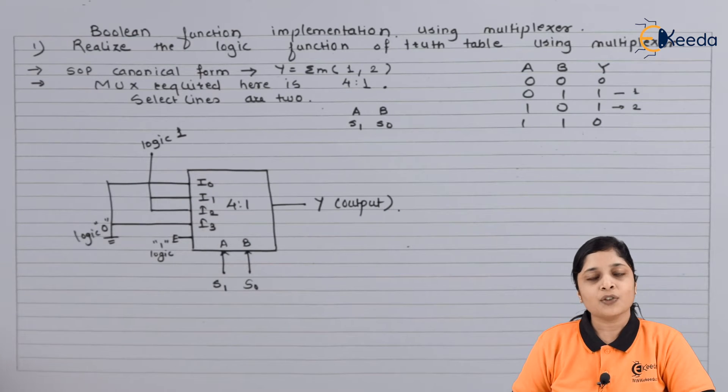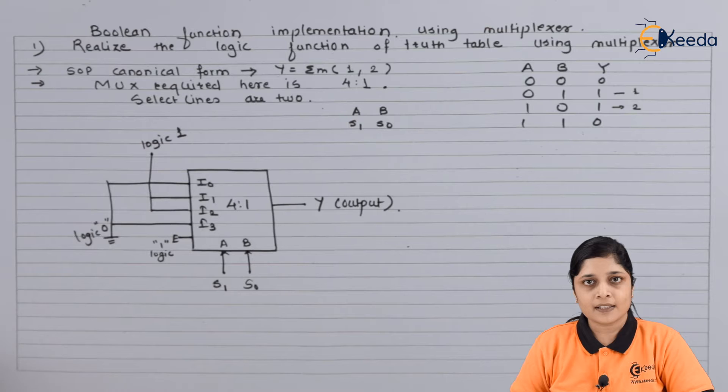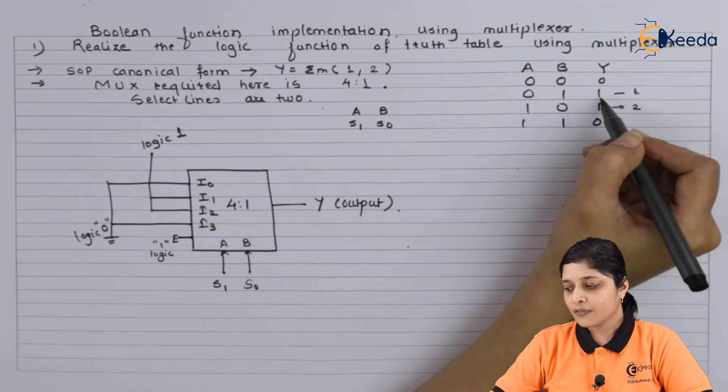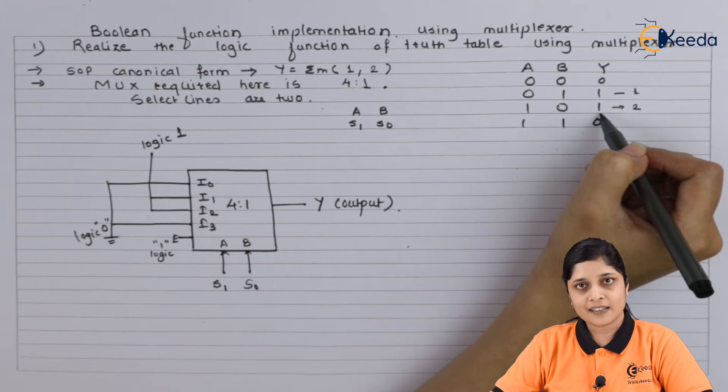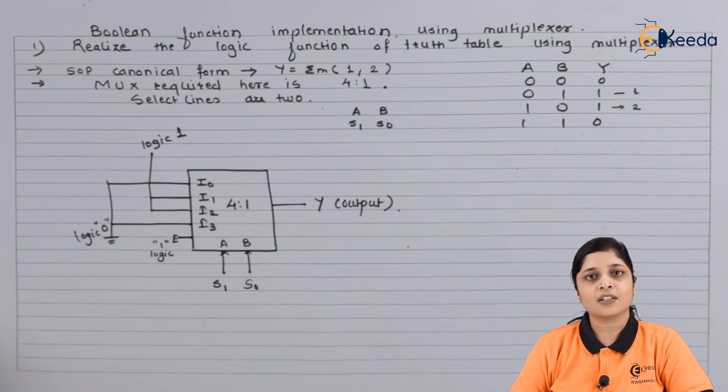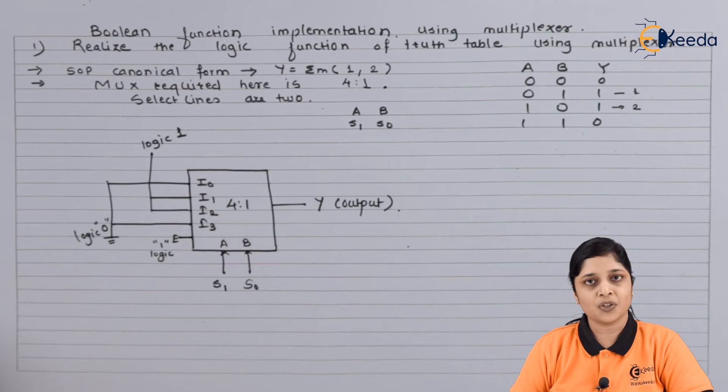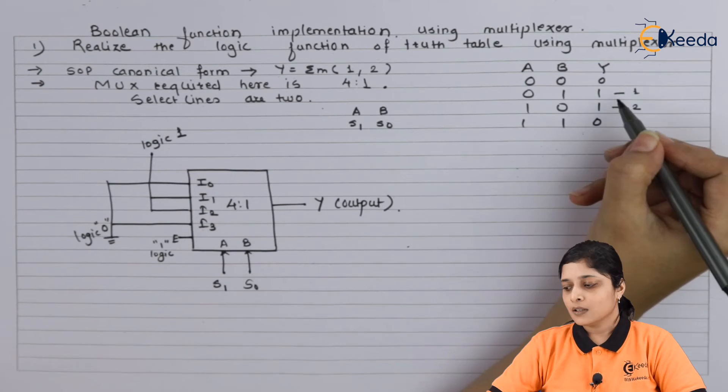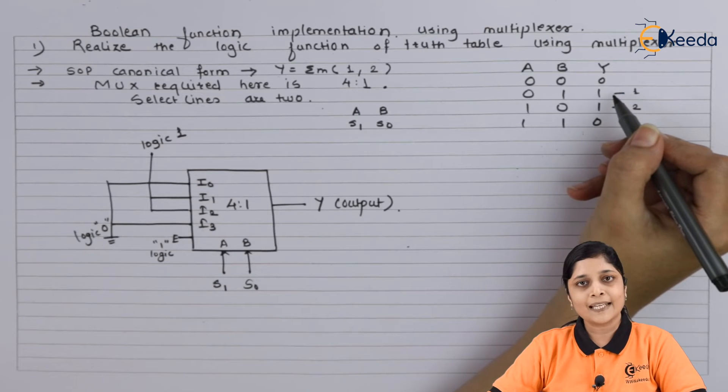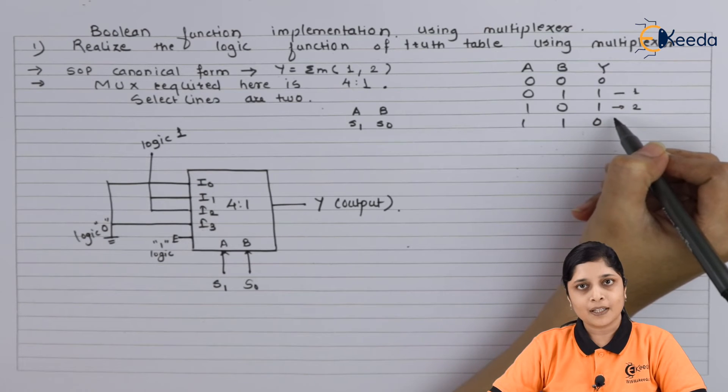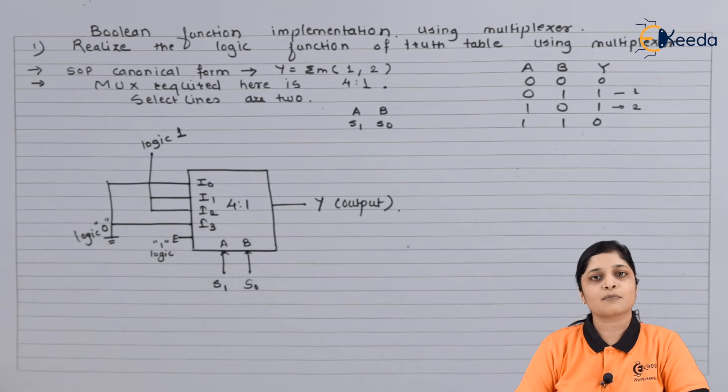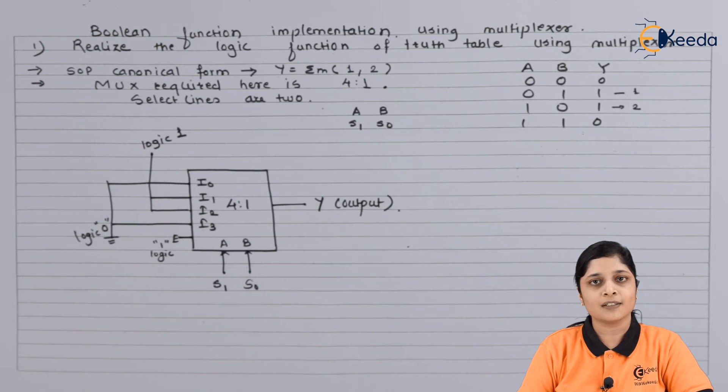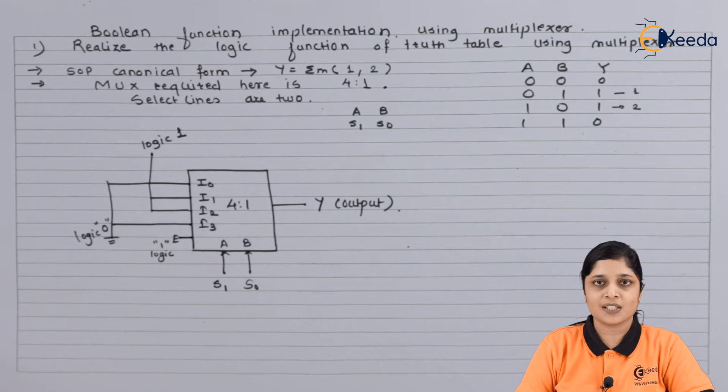In this way you require two select lines and only one output and four inputs. Whenever logic one is present inside the truth table, you have to connect that minterm to logic one and remaining minterms you have to connect to logic zero.